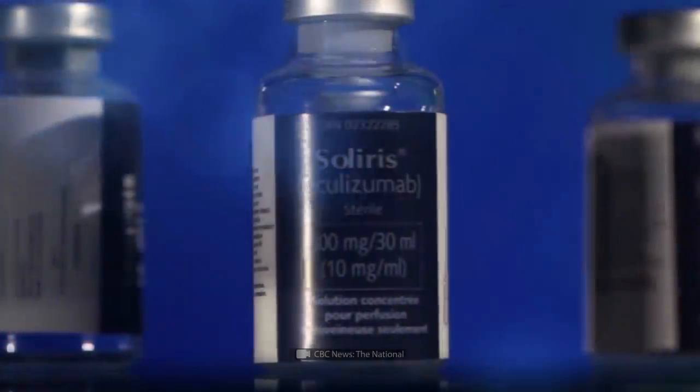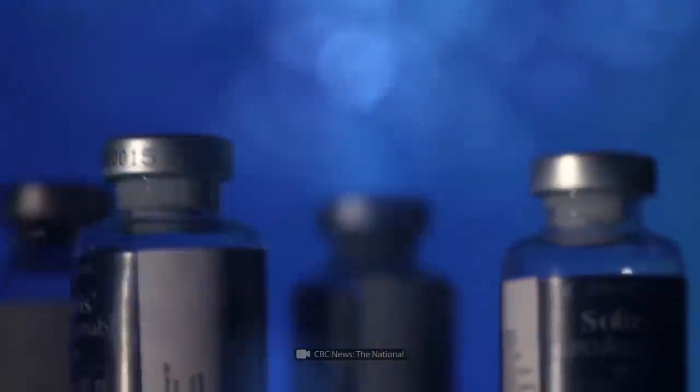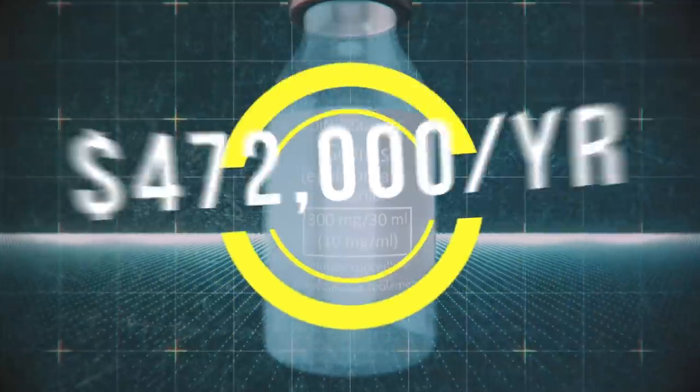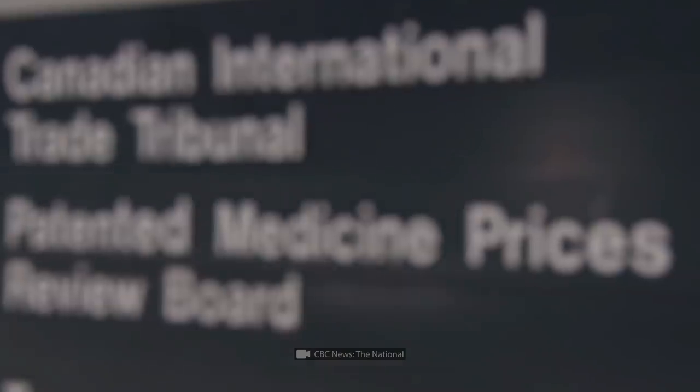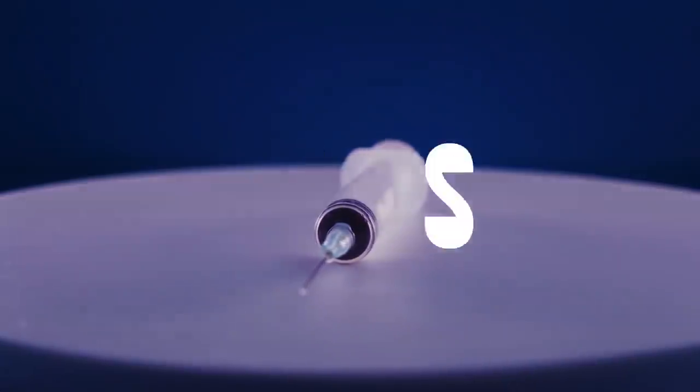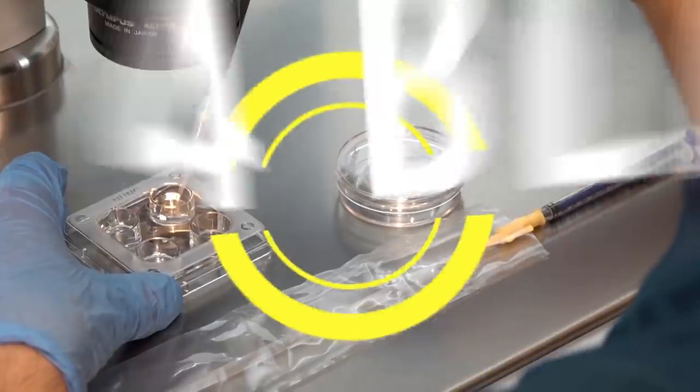Soliris is the world's most expensive drug, which is prescribed for rare and life-threatening blood diseases. The annual cost of treatment with this drug is almost half a million dollars. Why is it so expensive?